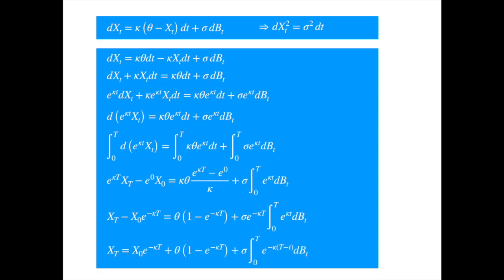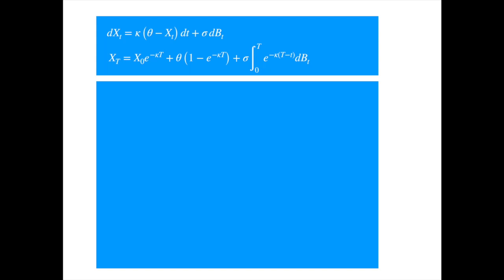We now characterize its probability distribution. We reproduce the SDE and its solution first. It is easy to see that x is normally distributed. One just needs to recall that the integral of a deterministic function with respect to Brownian is Gaussian. Let's calculate its mean, variance, and covariance.